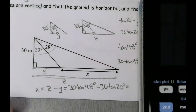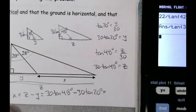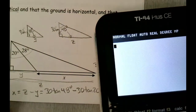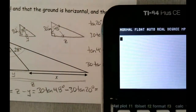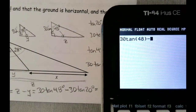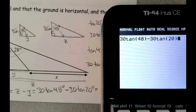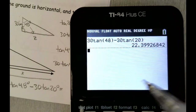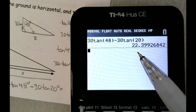Now I need to get an answer, so I bring my calculator over. That will be 30 times the tangent of 48, minus 30 multiplied by the tangent of 20, and the answer to the nearest tenth is 22.4.